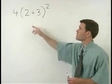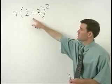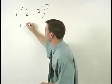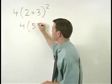So our first step here is to add 2 plus 3, which gives us 5. So in our next step we have 4 times 5 squared.